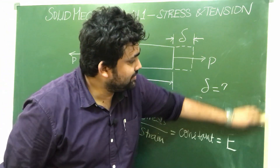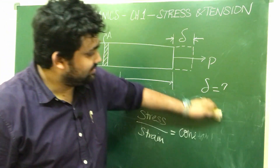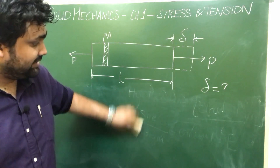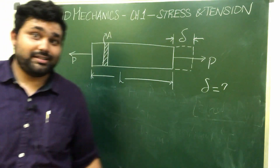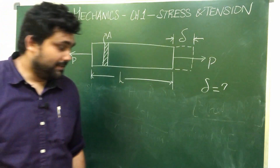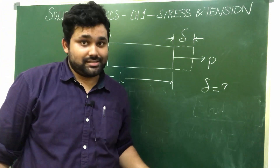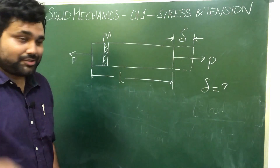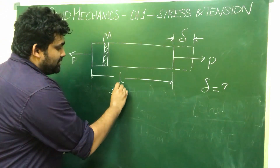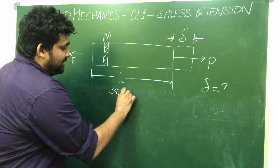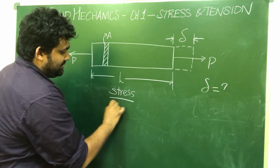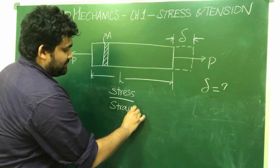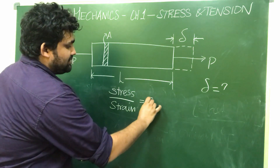Stress is force per unit area. Strain is total elongation divided by actual length. According to Hooke's Law, stress divided by strain is nothing but Young's modulus, E. This is the formula that we use. Hooke's Law: stress divided by strain equals Young's modulus E.